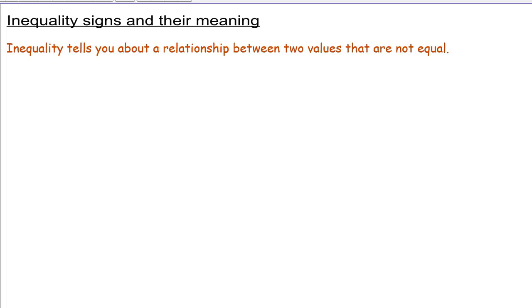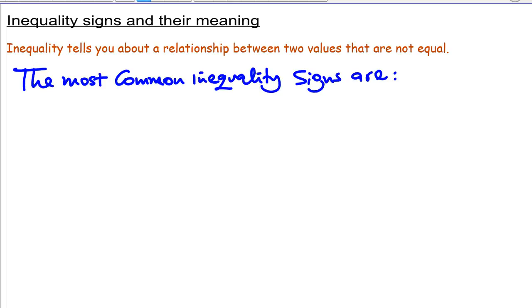The most common inequality signs are... The first one is greater than. The symbol is written below here. This means whatever is on the left is greater than whatever will be on the right.